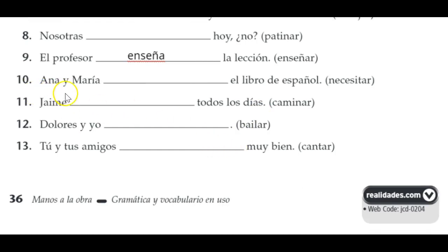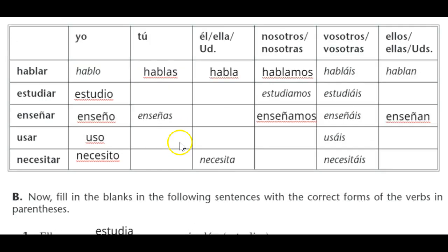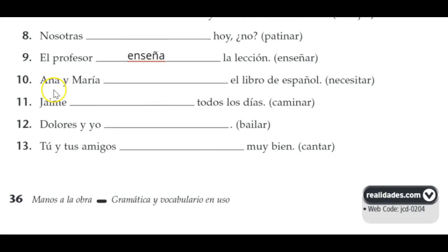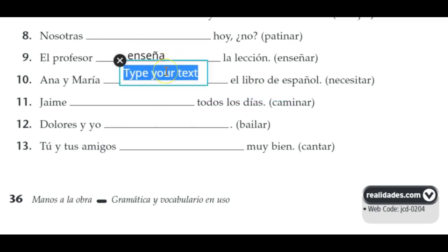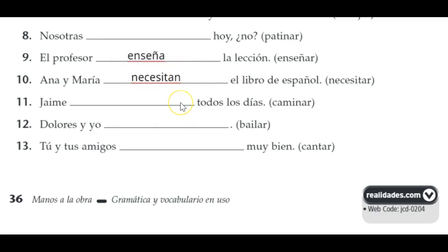Number ten: Ana y María — it's two girls you're talking about, so that means they — ellas. Ana y María necesitan el libro de español — they need it. Jaime walks every day: camina todos los días — that's the he form. Dolores y yo bailamos — this is nosotros or nosotras. When it's somebody else and you, that means you say 'us.'